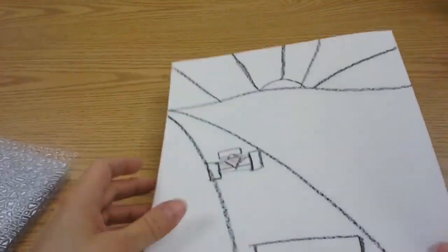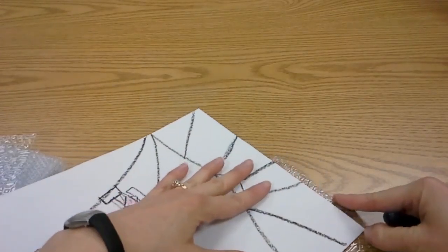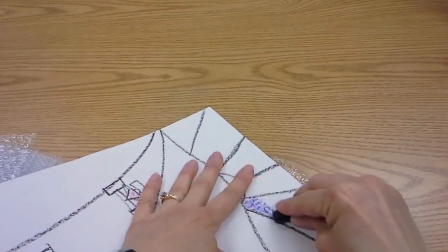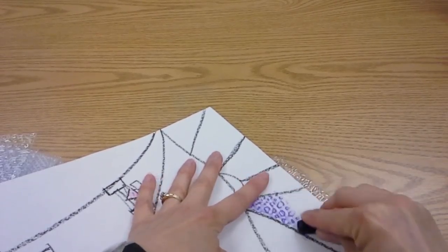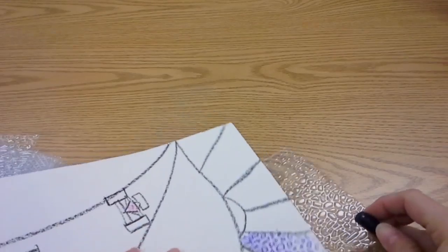I want a different texture. I'm going to switch my plate. Lay it underneath exactly where I want it and color with my crayon. Sometimes it helps to tip the crayon, kind of use the side so the texture will show up.